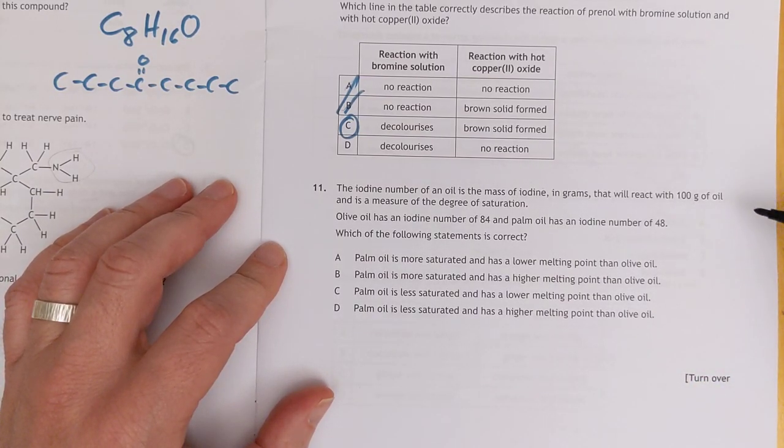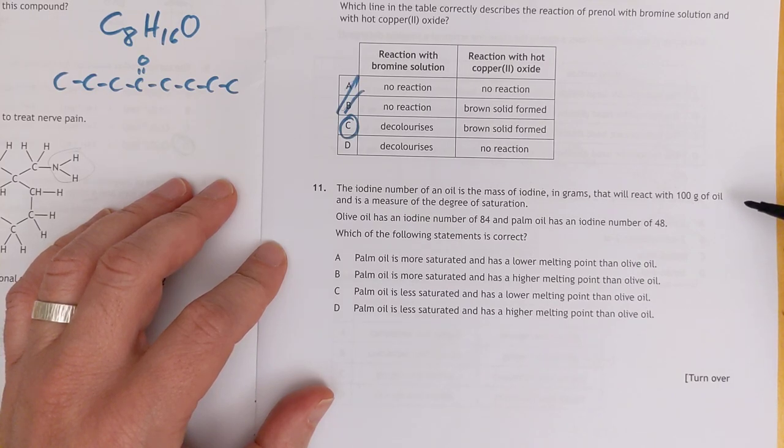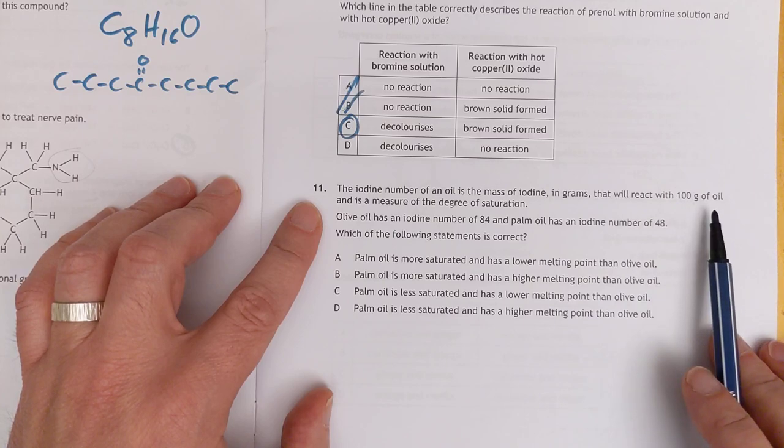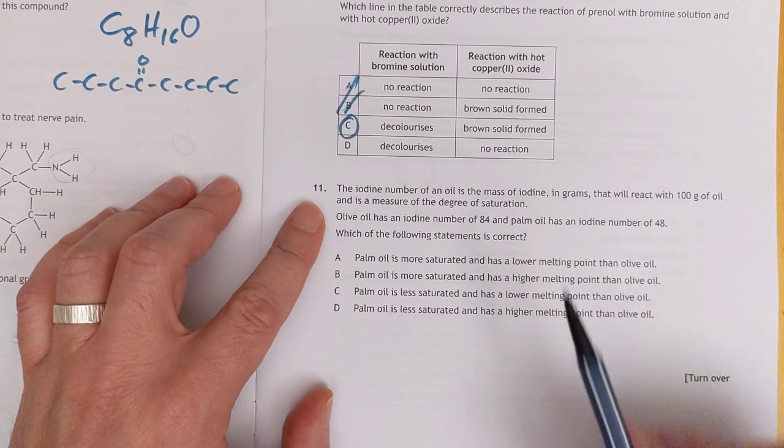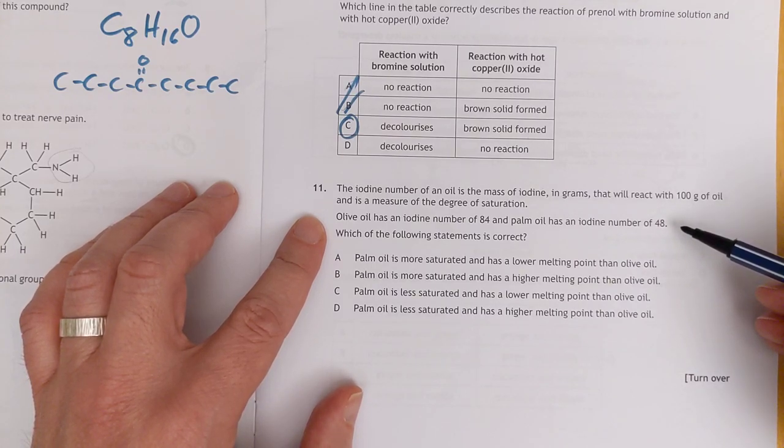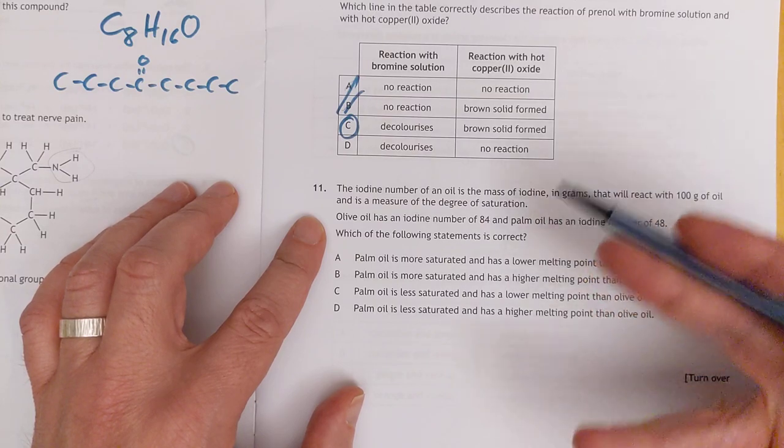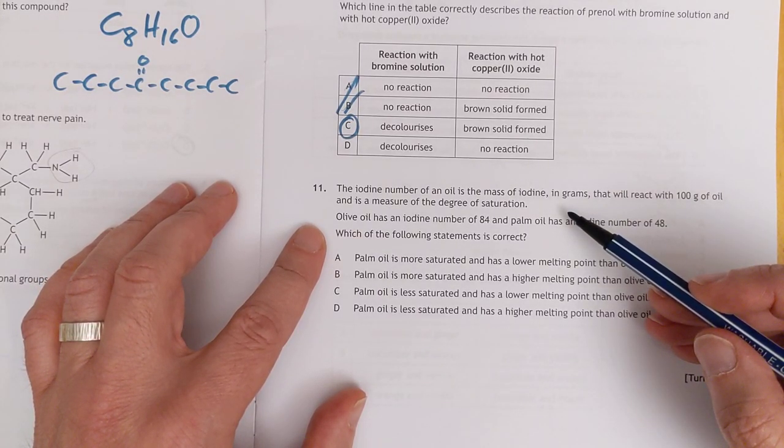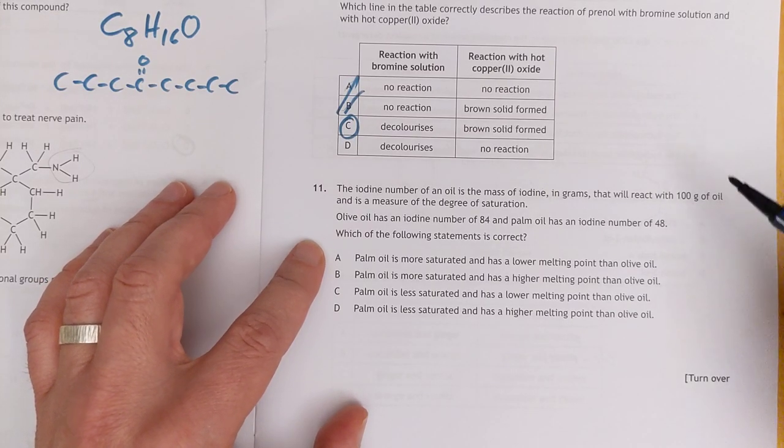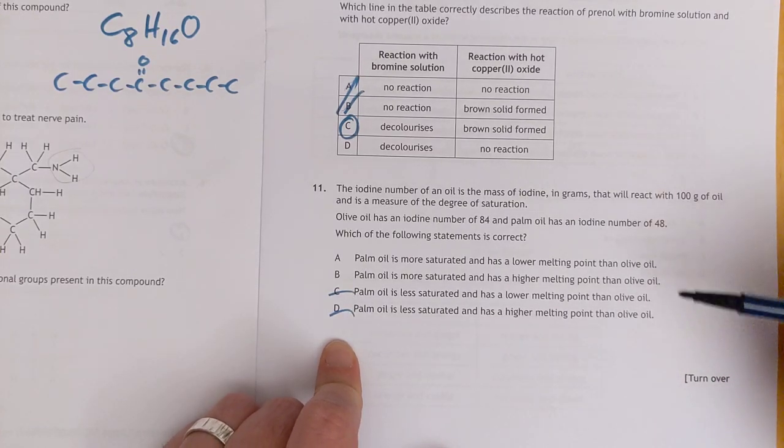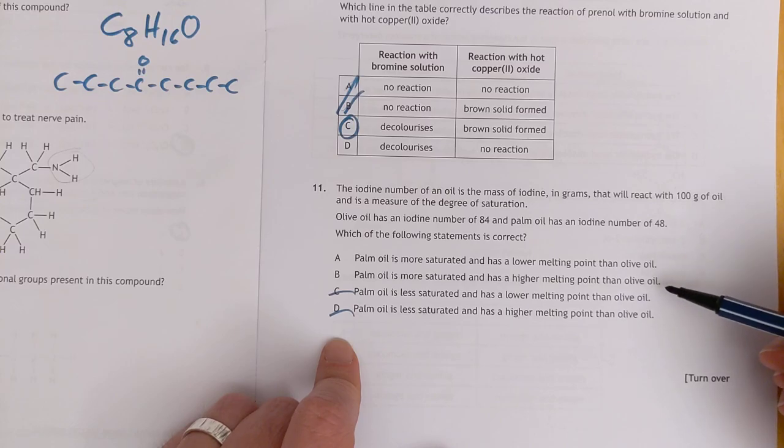Number eleven. The iodine number of an oil. This is an old one too. If you're as old as I am, you get to recognize some of these from a long time ago. Problem solving. Never heard of the iodine number. It's the mass of iodine that will react with 100 grams of oil. As a measure of the degree of unsaturation, that is very true. Because the more double bonds, the more iodine that can react. Because you're just adding the iodine, cracking open the double bond, it's additional reactions. So palm oil is less, which means palm oil is more saturated. So these two are out. And if it's more saturated, it will have a higher melting point than olive oil, which is B.